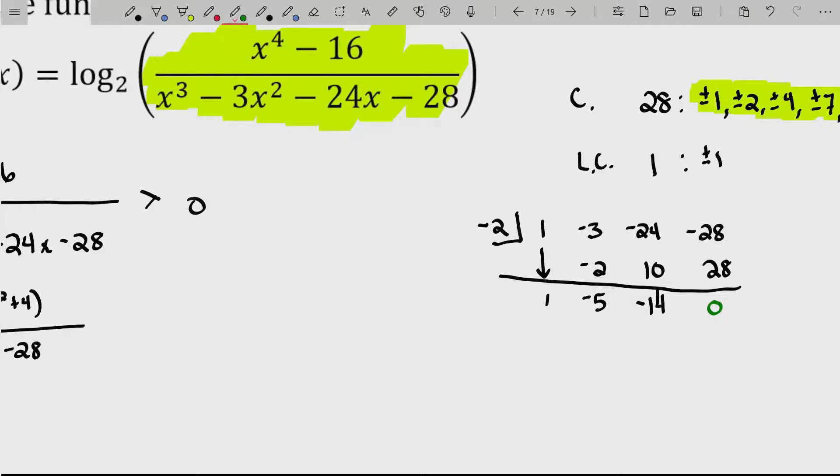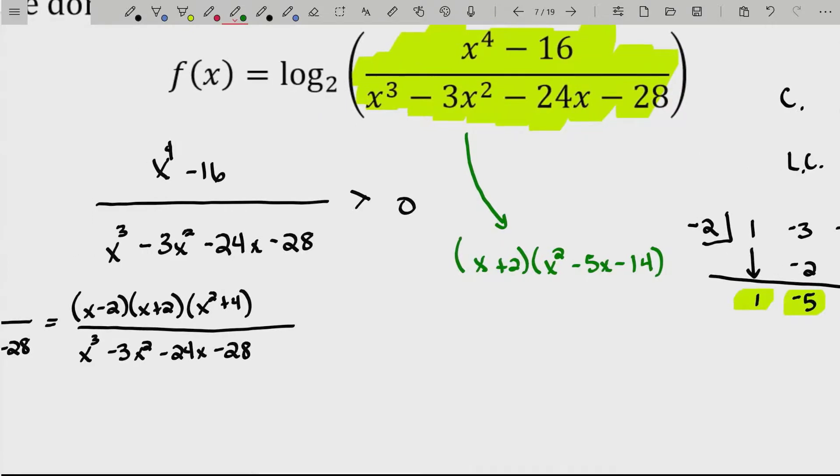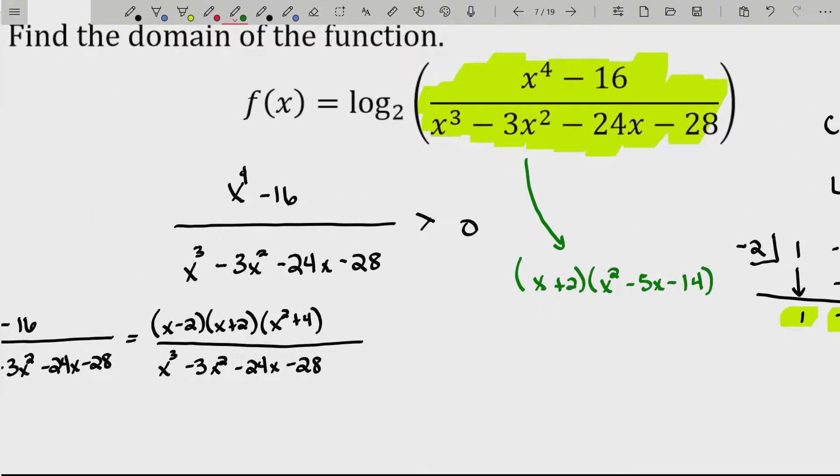And so x minus a negative 2 is a factor. So that polynomial will factor to x minus the negative 2 times 1x^2 minus 5x minus 14. And that is going to factor to a negative 7 and a positive 2. So we've got this beautiful factorization done for us right now. So this is going to be x minus 2, x plus 2. I'm just copying. And you can see I have the factorization there. And you can cancel factors. This x plus 2 will cancel with that x plus 2.